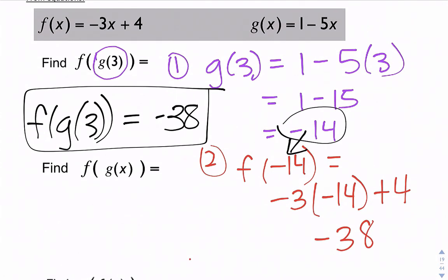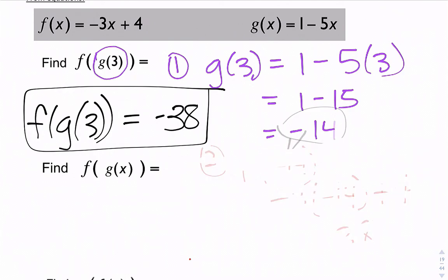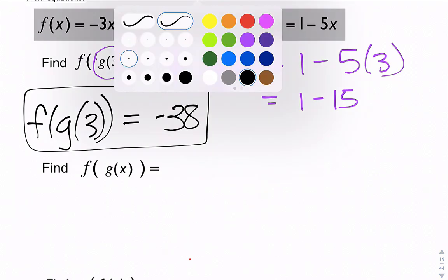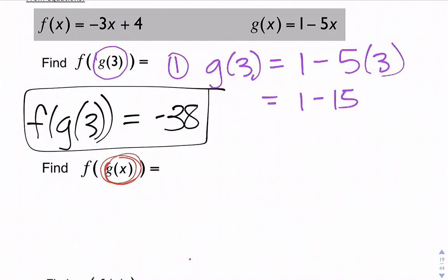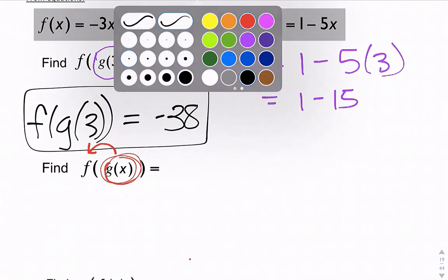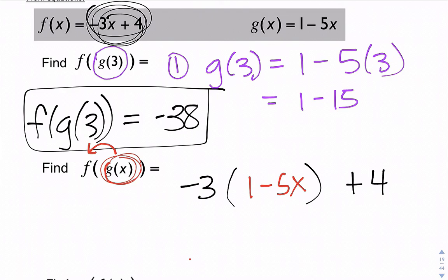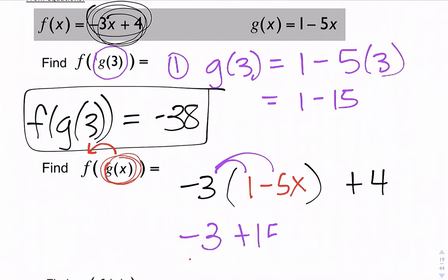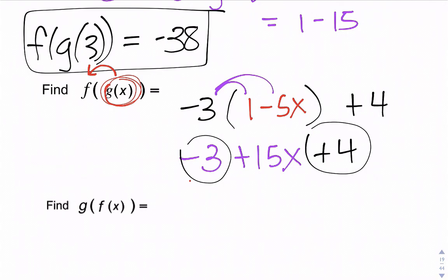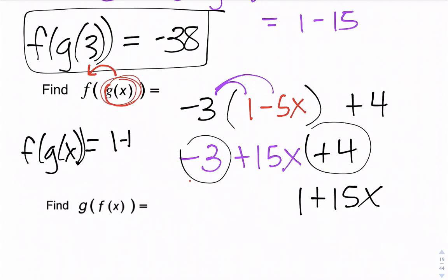Find f of g of x. f of g of x means take the g of x function and plug it in for x into the f function. Our f function is negative 3x plus 4, so instead of x we plug in g of x, then add 4. When you plug a function into another function you get an expression, not a number. Distributing gives negative 3 plus 15x, plus 4, and combining like terms gives 1 plus 15x. So f of g of x equals 1 plus 15x.